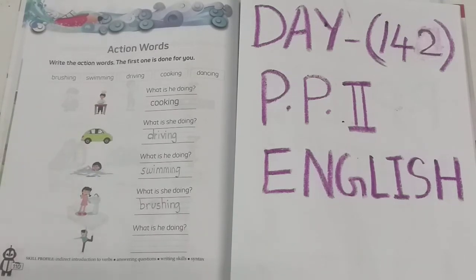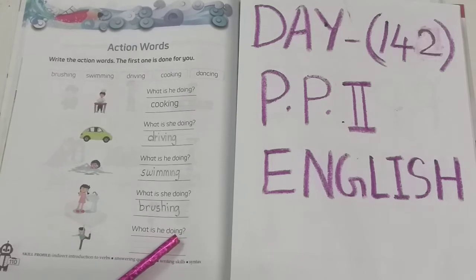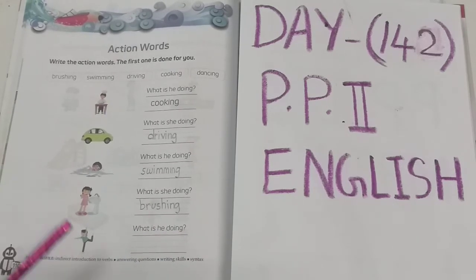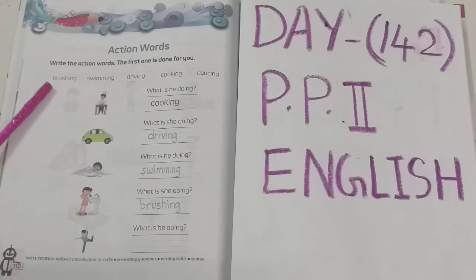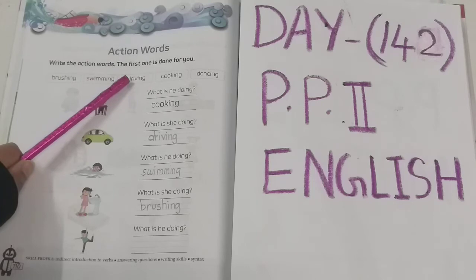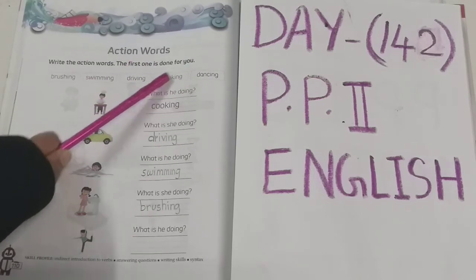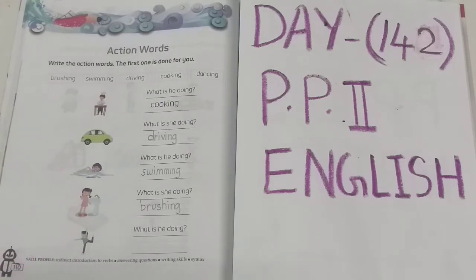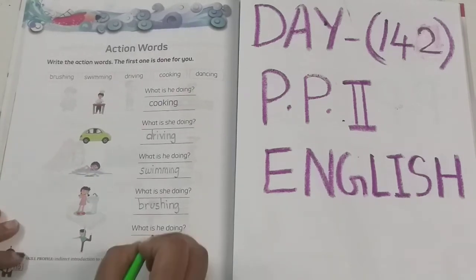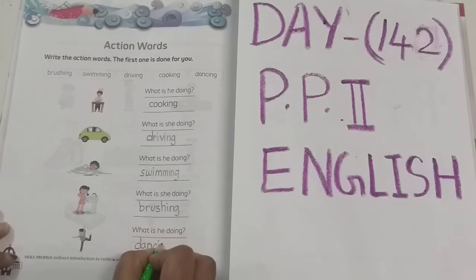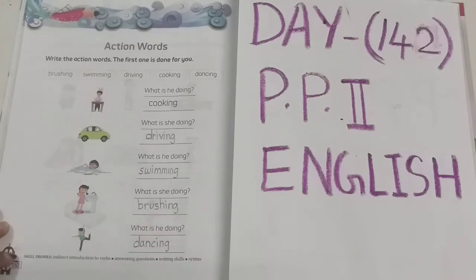See the next. What is he doing? Is he brushing? No. Swimming? No. Driving? No. Cooking? No. Dancing? Yes! Is he dancing? Yes. So you have to write dancing — D-A-N-C-I-N-G. Dancing.